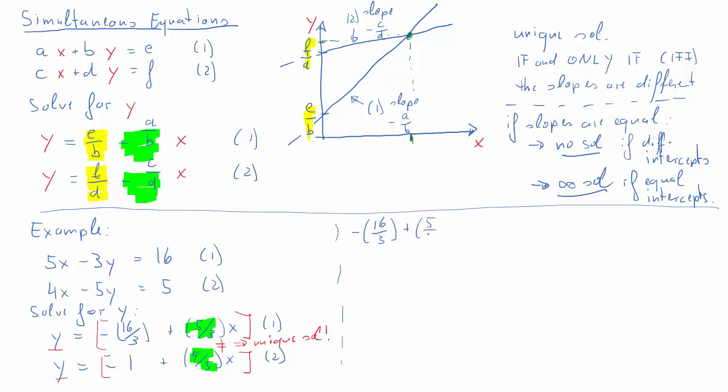That's what we do here: negative 16 over 3 plus 5 over 3 x equals negative 1 plus 4 over 5 x. Let's bring all the terms with x onto the left hand side, so we get 5 over 3 minus 4 over 5 x equals negative 1 plus 16 over 3. We'll find the common denominator, which would be 15, and we expand so we get 25 minus 12 over 15 x equals negative 3 plus 16 thirds.